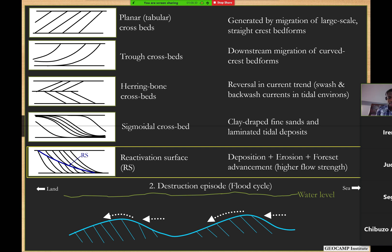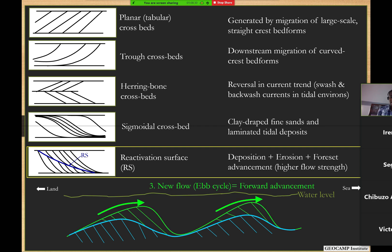Then you now have another episode of ebb or another episode of ebb flow, which now shows another cycle of faucet planes dipping in the same direction as the underlying or pre-existing faucet planes, faucet units. When that happens, you have different sets of different bed sets dipping in the same direction.